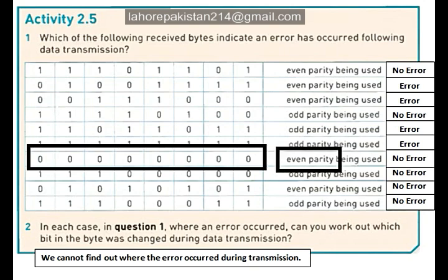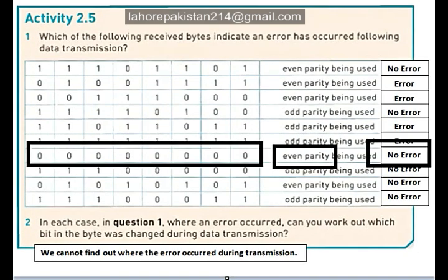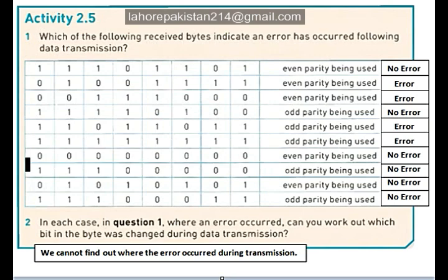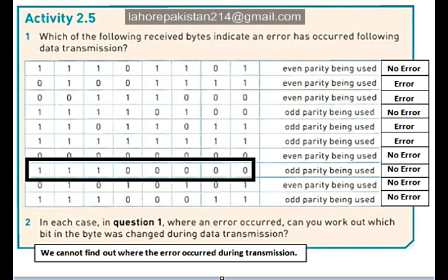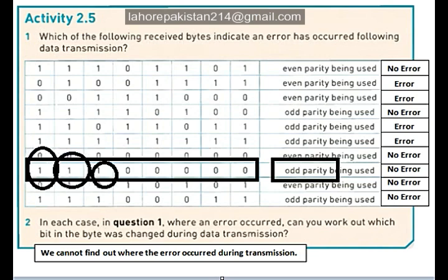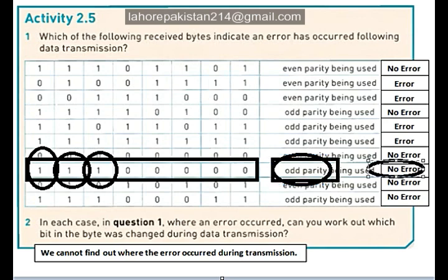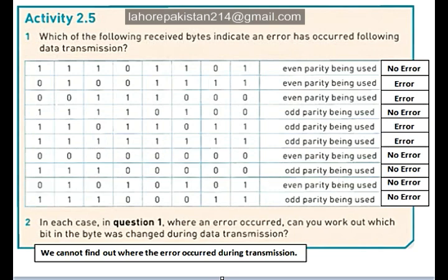Now let's look at part 8, in which you are supposed to have odd parity. As you know, 0 is an even number, so no error has occurred during its transmission. Now let's count the number of ones: 1, 2, 3. Three is an odd number and you were supposed to have odd parity, so no error has occurred during the transmission of this byte.